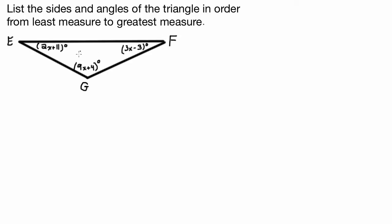So as we can see, we've been given measures for these angles. Angle E is 2x plus 11 degrees, angle G is 9x plus 4 degrees, and angle F is 3x minus 3 degrees. So what we need to do is solve for x and then find the measures of the angles. Then we can list them in order from least measure to greatest measure. And then given those angles, we can list the sides in order from least measure to greatest measure.